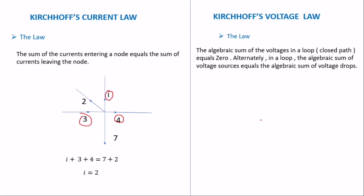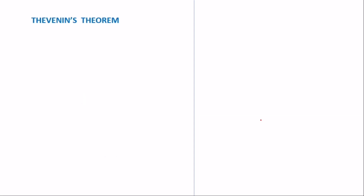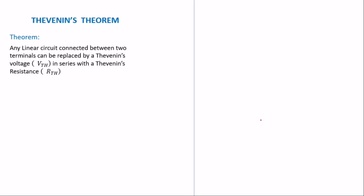The example is based on Thevenin's theorem. Thevenin's theorem states that any linear circuit connected between two terminals can be replaced by a Thevenin voltage in series with a Thevenin resistance. When a circuit is given and you are asked to find the current in one of the resistors, you must rearrange the circuit so that it is in series with the Thevenin voltage and the Thevenin resistance.